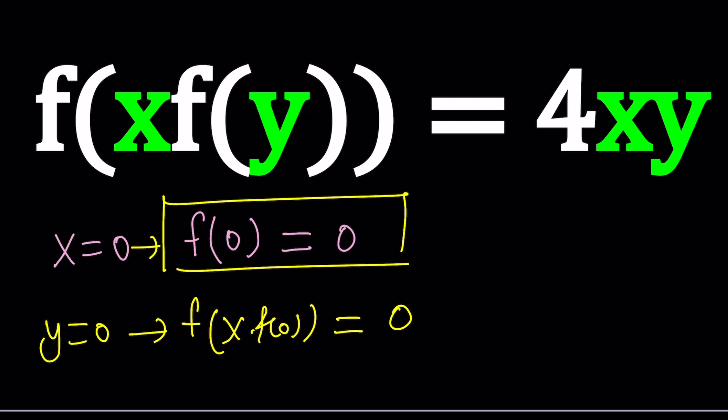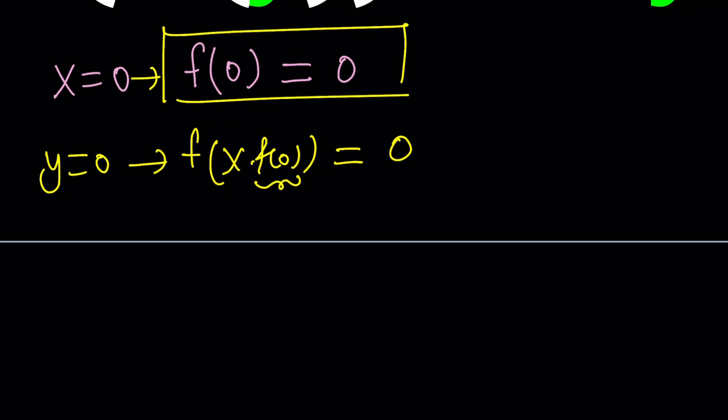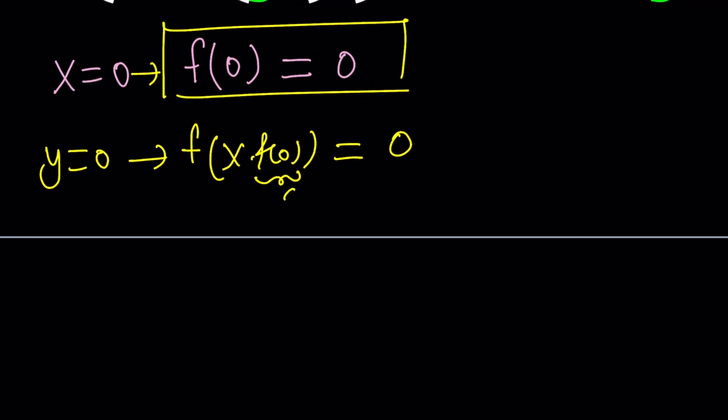Well this time f(0) is already known to be 0. And if you replace f(0) with 0 you just get f(0) equals 0. So that doesn't seem to be very helpful does it. But think about it this way. f(0) is a constant and we get f(cx) equals 0 from here. And if you replace x with x over c then we should be getting f(x) is equal to 0.